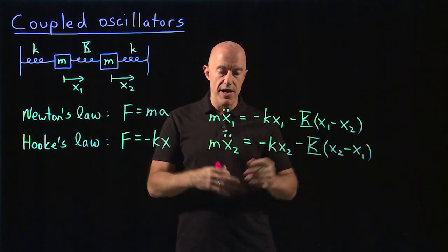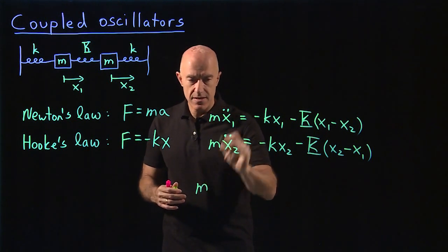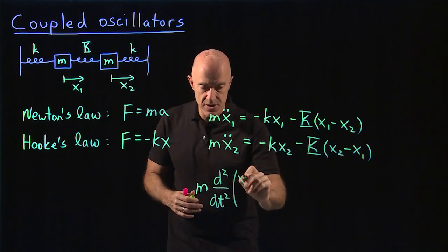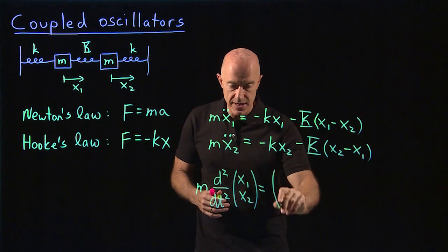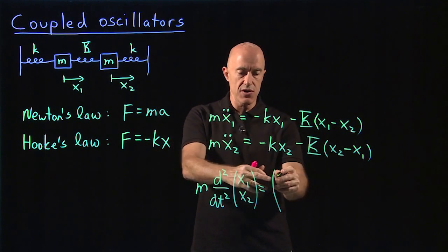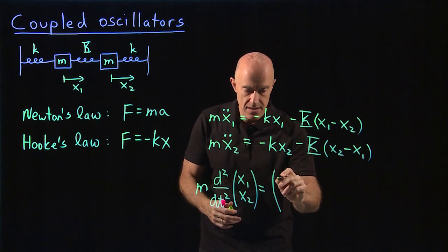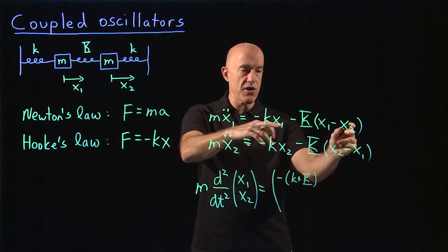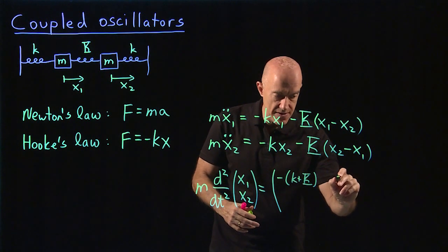We can put this equation in matrix form. What would it look like? We would have the mass times the second derivative with respect to time of the position vector (x1, x2) equals a matrix. So from the first equation is the equation for x1 double dot. So we need the terms proportional to x1. That would be minus little k minus big K. So we have a minus (little k plus big K) in the first element. And then the term proportional to x2 would be plus big K x2. So we would have a plus big K here.